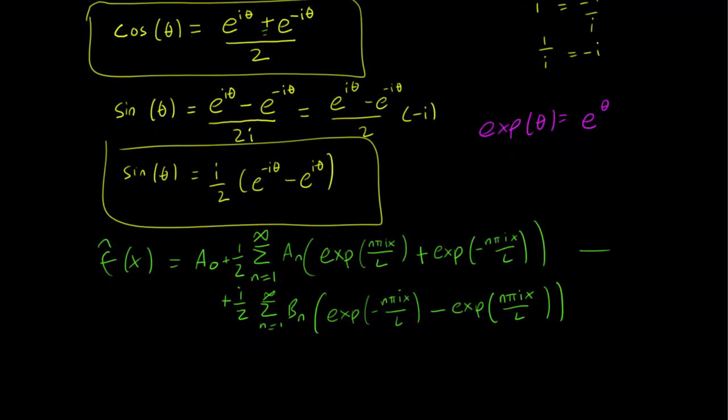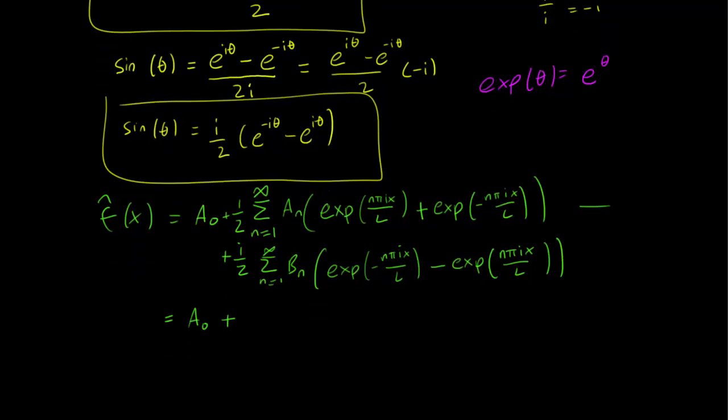So now we can collect all the terms in terms of exponential. The A₀ remains the same, and what's going to happen is that we are going to take 1/2 the sum of n equals 1 to infinity. So we are first going to collect all the exp(nπix) terms. Notice that the second sum here has an i in it, so we need to account for that too. And what we get is that when we are just concerned about the nπix/L terms, we have an aₙ from the first sum, and we have a -ibₙ from the second sum. There's an i here, remember.